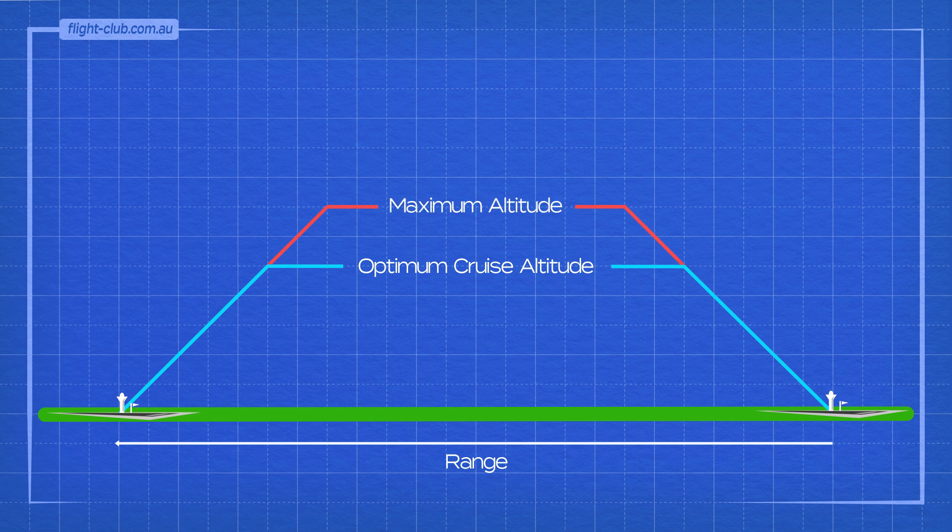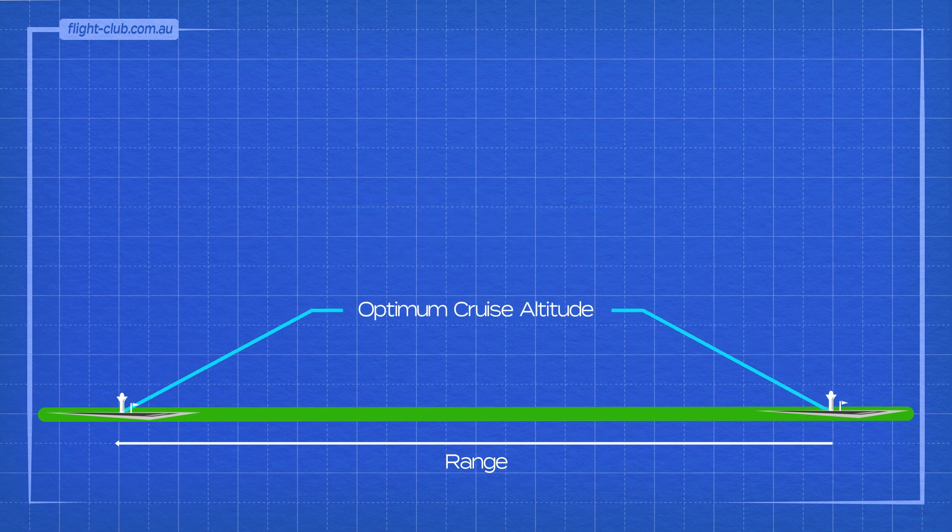The optimum cruise altitude is also not constant. It moves up or down during the flight as the atmospheric conditions and the weight of the aeroplane change.